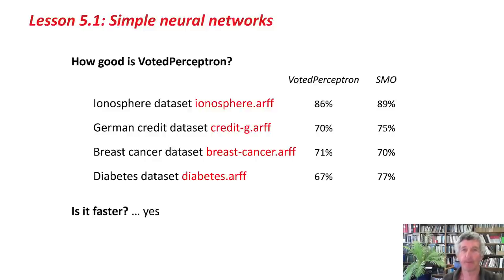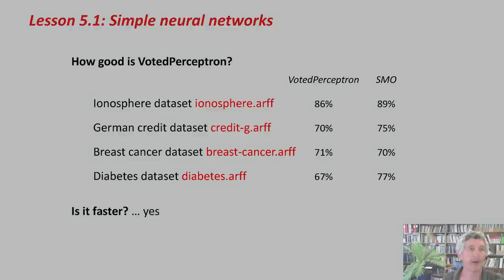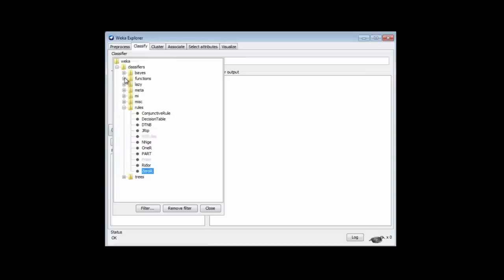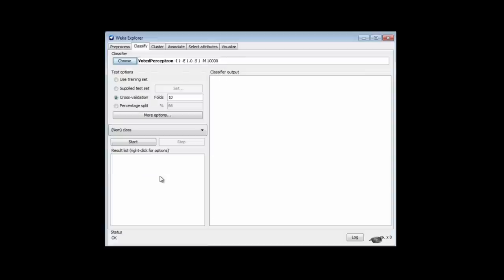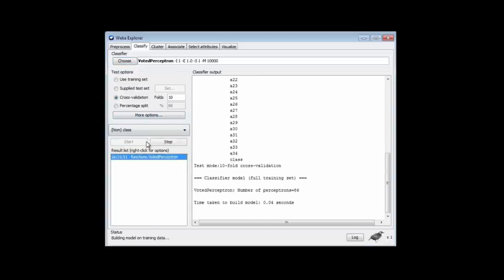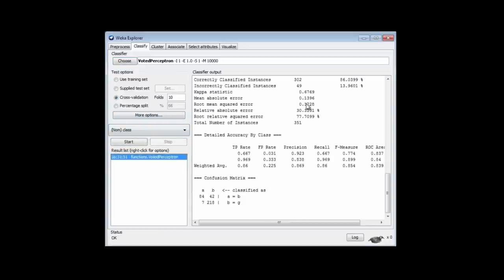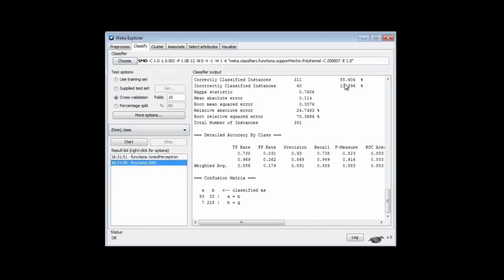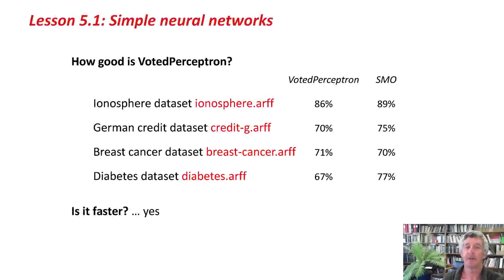Let's take a look. I'm going to look at the Ionosphere dataset — I've got it open here in Weka. I go to Classify, and the voted perceptron is in the Functions category. If I select that and run it using cross-validation, I get 86%. If I were to choose SMO, I would get 89%. For the German credit data, we also get slightly better performance with SMO. For the breast cancer dataset, they're almost exactly the same, and for the diabetes dataset, SMO is again a little bit better. It's certainly true that the voted perceptron is faster — maybe 2 times, 5 times, perhaps up to 10 times, depending on the dataset.